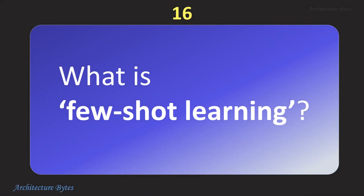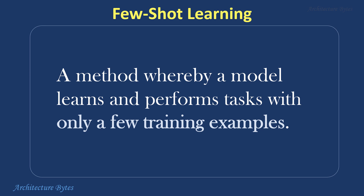What is few-shot learning? This is a method whereby a model learns and performs tasks with only a few training examples. It is useful in situations where collecting and training on large datasets is impractical or expensive, and it enables AI systems to adapt quickly to new tasks or domains with minimal data.